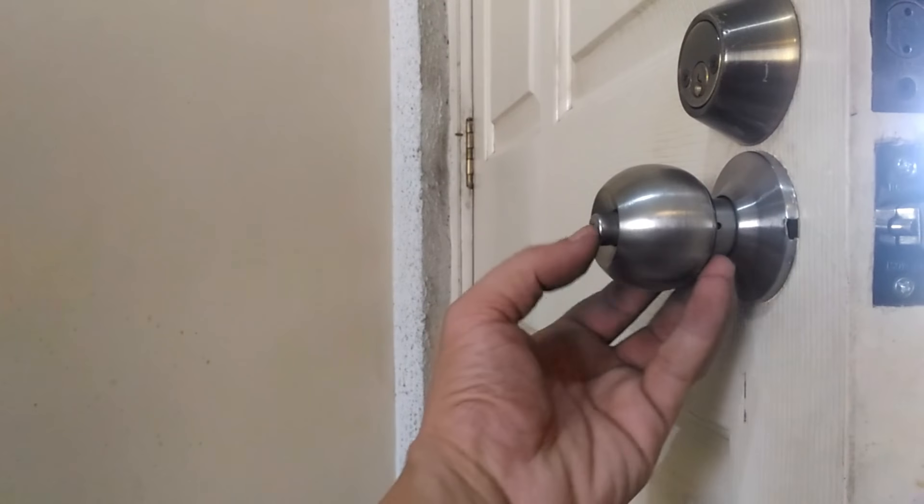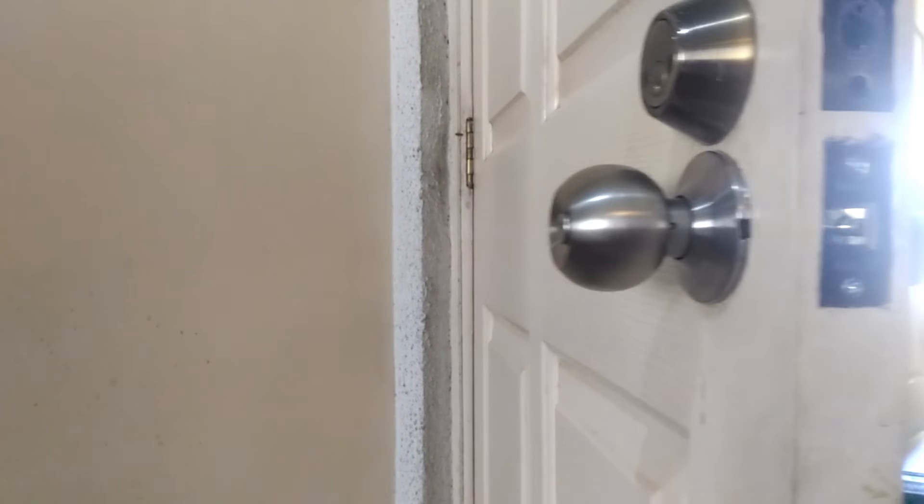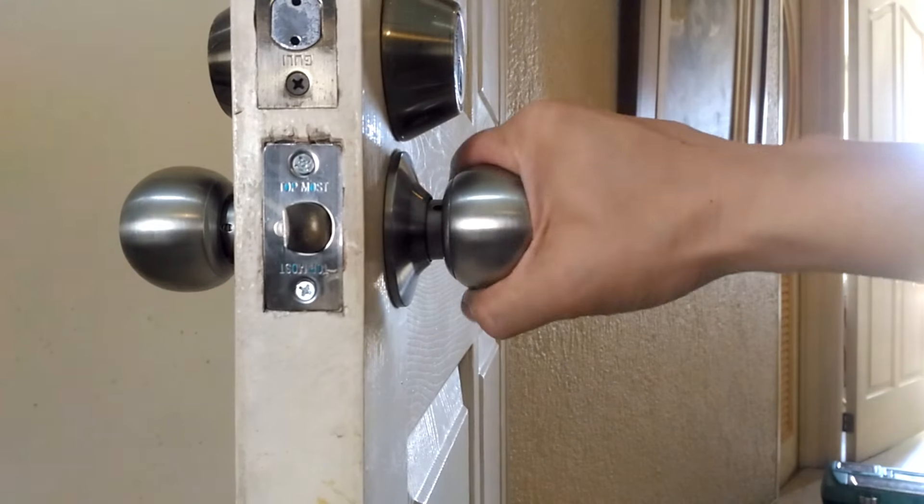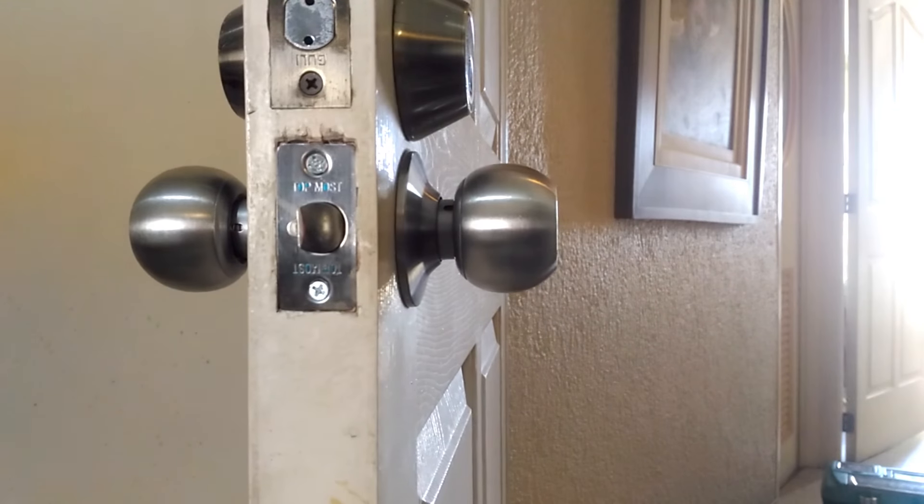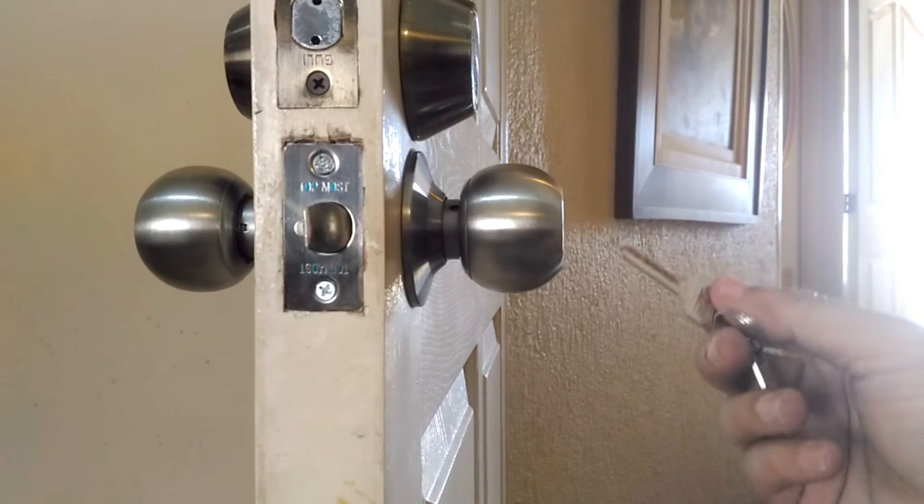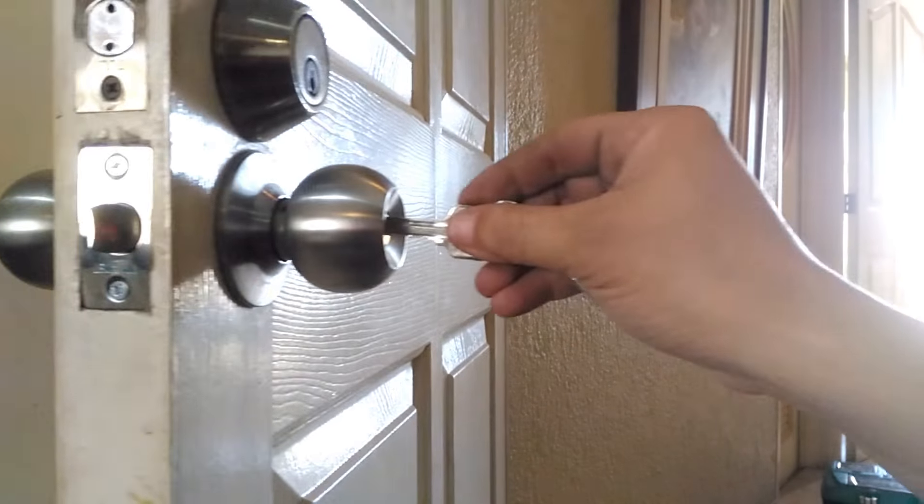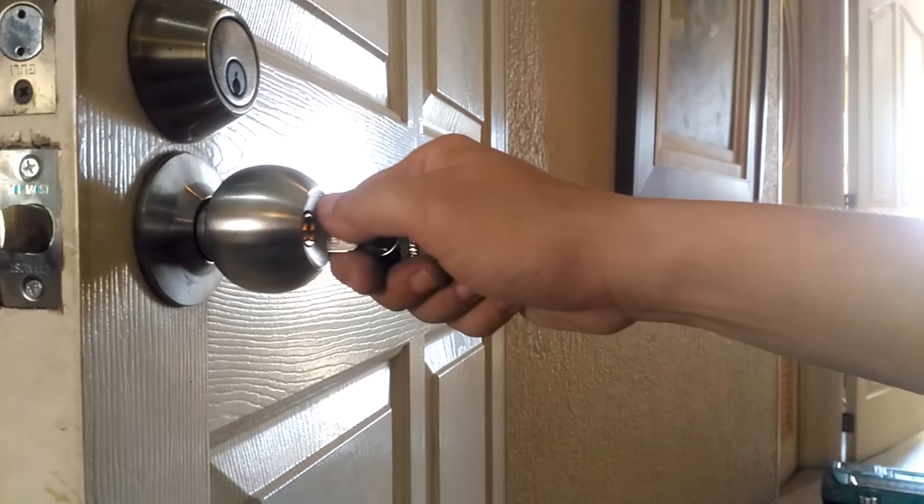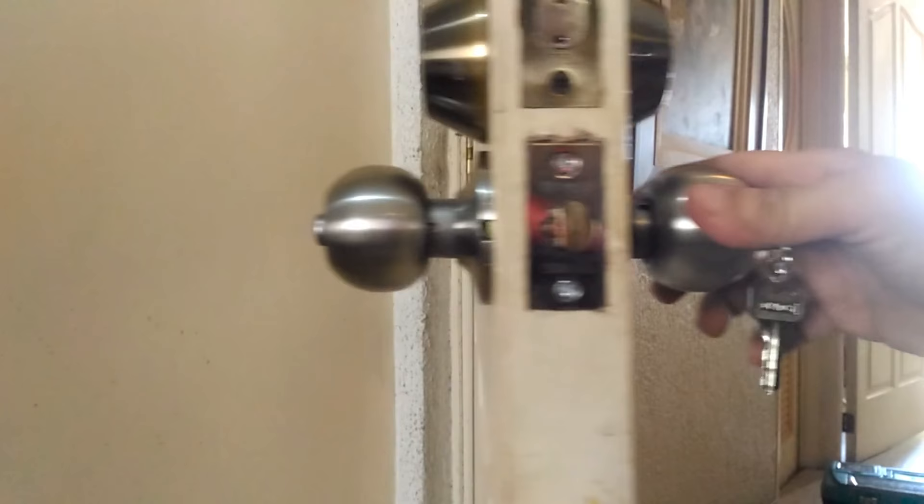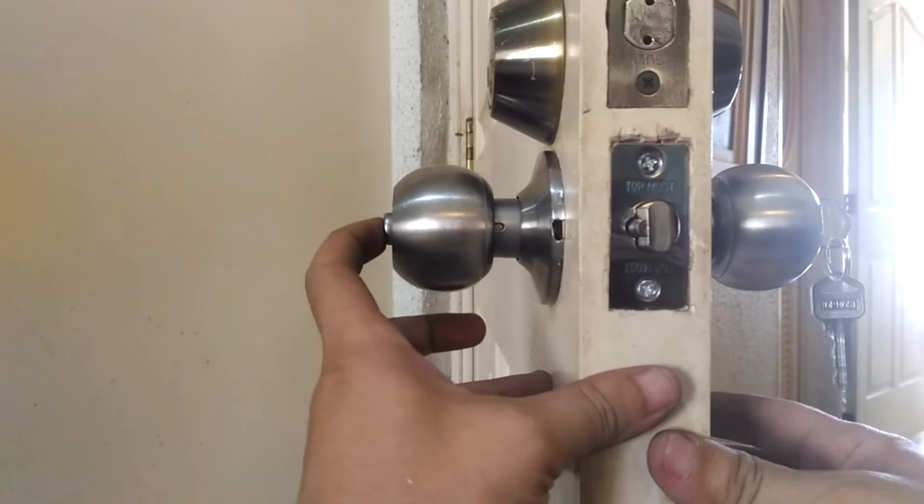This is a properly working door knob. The lock on the inside knob is easy to press. The knobs feel solid when you grip them. You cannot turn the outside knob unless you unlock it with the right key. And the door closes without a snag.